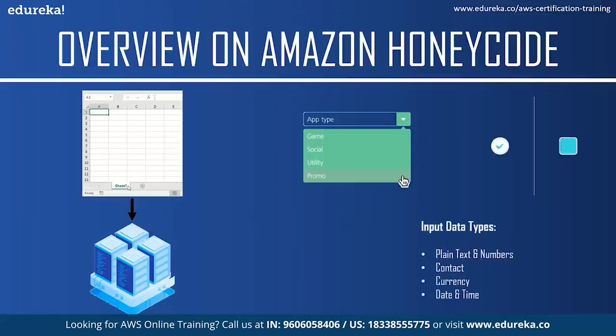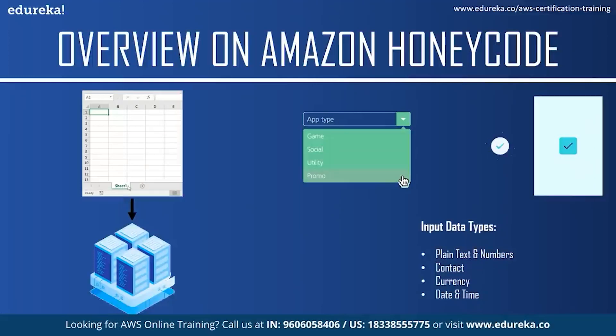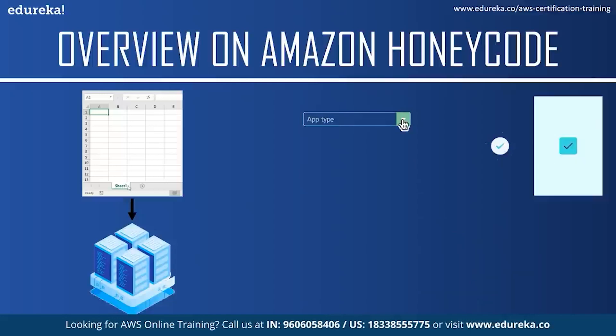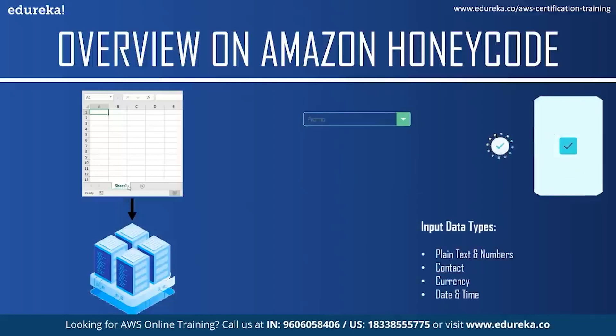Your data format can be either text, number, contact — which could include name, phone number, and email ID of a person — or it could be currency, percentage, or date and time.